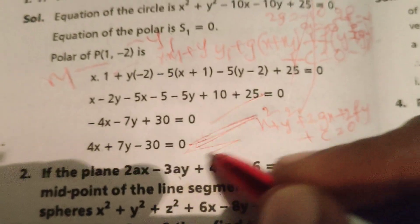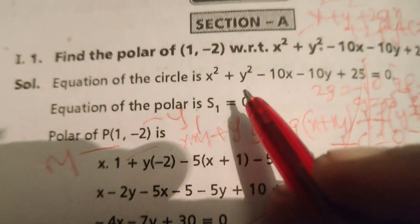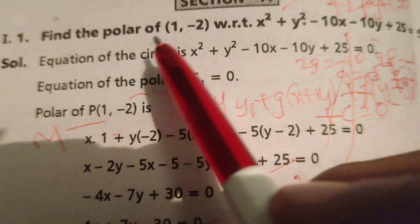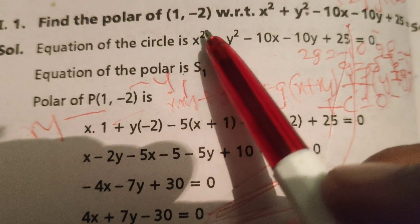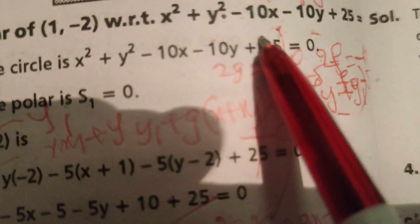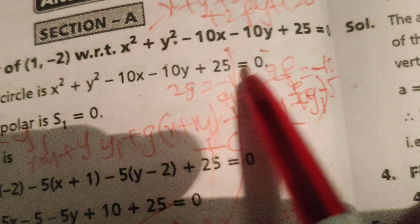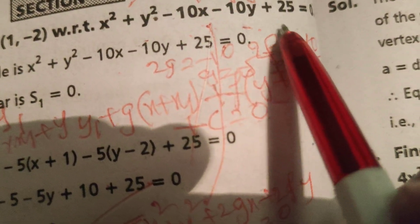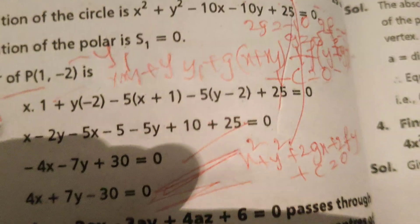This is the equation of the polar of the given point (1, -2) with respect to the circle x² + y² - 10x - 10y + 25 = 0. Thank you.